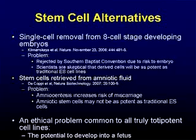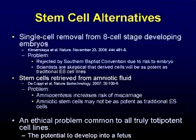So these are problems we have to deal with. I'll mention some stem cell alternatives. It has been shown - just last year around November - in a paper that you can remove a single cell from the 8-cell stage and develop that into an embryonic stem cell line, and the morula at that point can go on and differentiate.